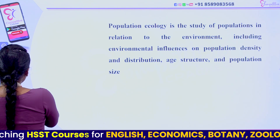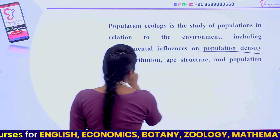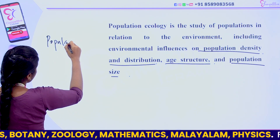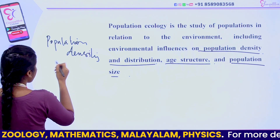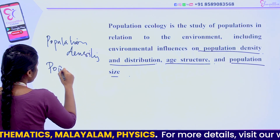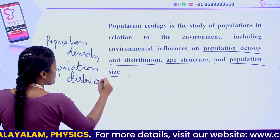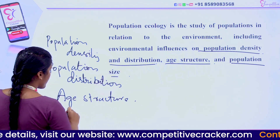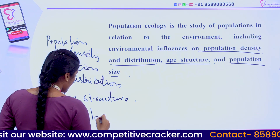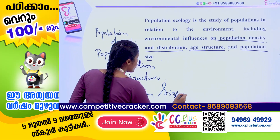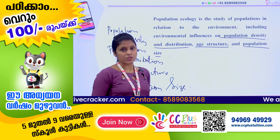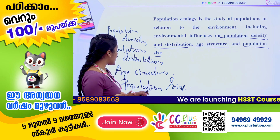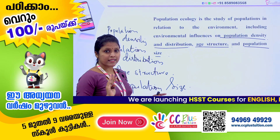The factors are population density, distribution, age structure, and population size. Now, what is population density? What is population distribution? What is the age structure? And what is population size? These are the issues we are discussing in population ecology.